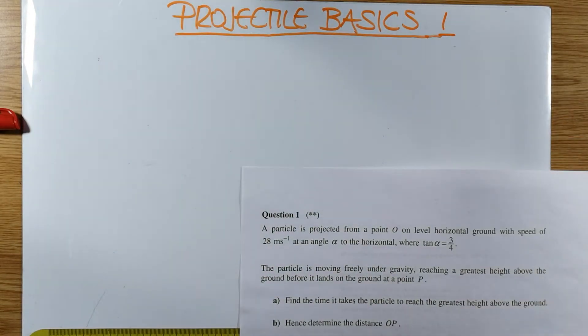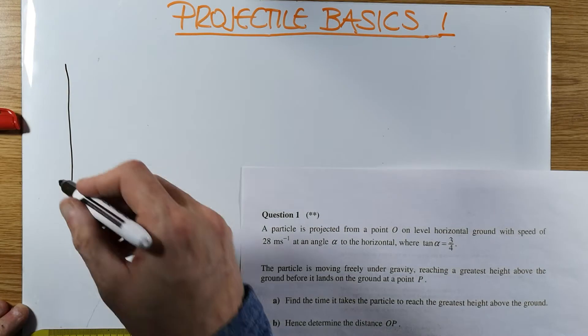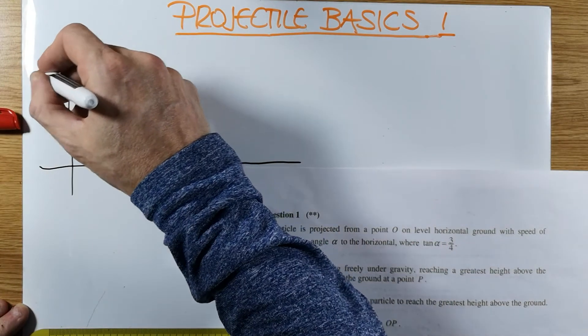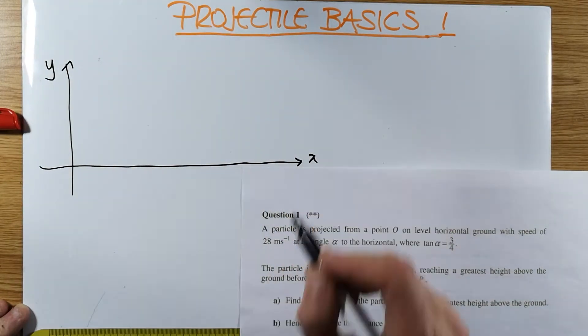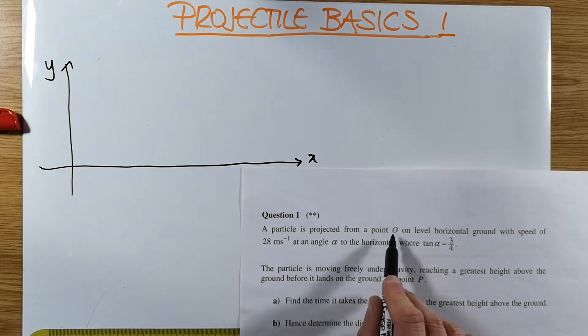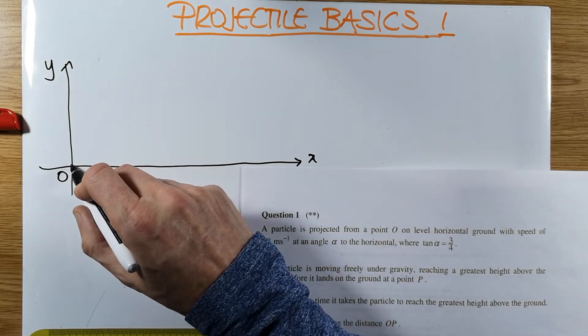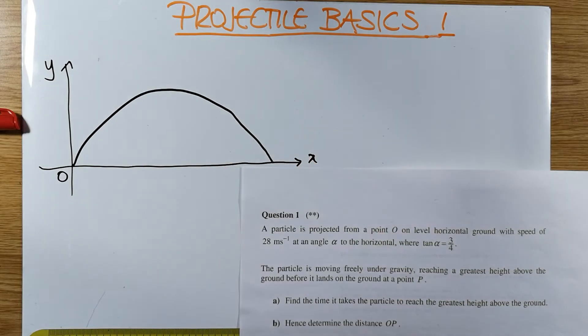The next thing is to do a diagram. The diagram for something like this is a set of axes. It's always the same when I'm doing work with my students. So it's x and y-axis. I place the origin where the particle is being projected. And here, conveniently, they did call it O. And then I draw the path that the projectile is going to follow, the trajectory as it's also known. So it's a parabola, an upside-down x-squared graph.